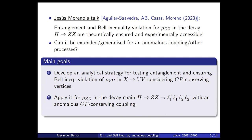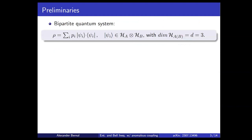The main goal is to develop an analytical strategy for testing entanglement and ensuring Bell inequality violation in a much broader class of processes. We consider a spin-zero particle that decays into two vector bosons, provided that the vertices appearing in this decay are CP conserving. We then apply this result to the decay chain of the Higgs into two Z bosons and their subsequent decay into four charged leptons.